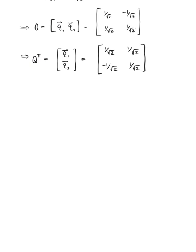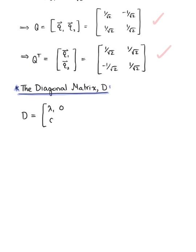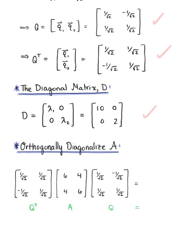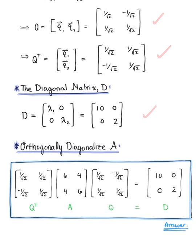Now that we have orthogonal matrix Q and its transpose, we are ready to identify the diagonal matrix D. The diagonal matrix D has the eigenvalues of matrix A along its main diagonal, so D = [10, 0; 0, 2]. With this, we can orthogonally diagonalize matrix A: Q^T · A · Q = D, which is our final answer.